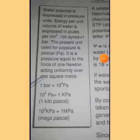Water potential is expressed in pressure units. Energy per unit volume of water is expressed in Joule per centimeter square. 106 dyne is equal to 1 bar.